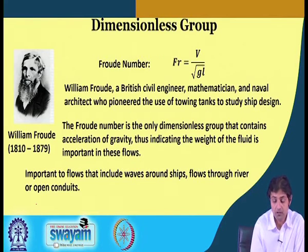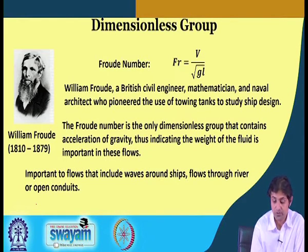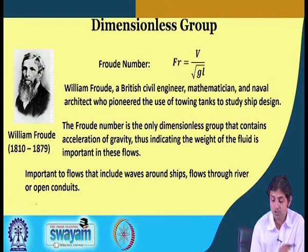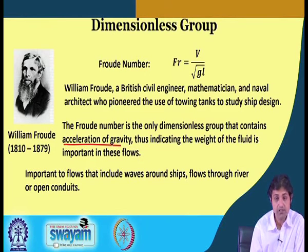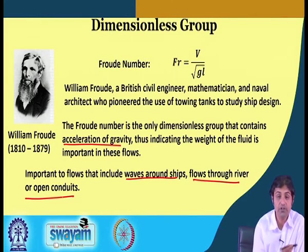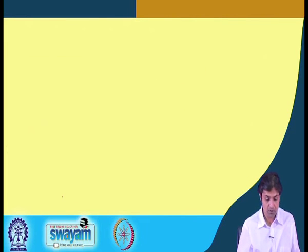Froude number is given by V divided by the square root of gL. William Froude was a British civil engineer and mathematician who pioneered the use of a towing tank to study ship design. The Froude number is the only dimensionless group that contains the acceleration due to gravity, indicating that the weight of the fluid is important in these flows. It is important for flows involving waves around ships and flows through rivers or open conduits.